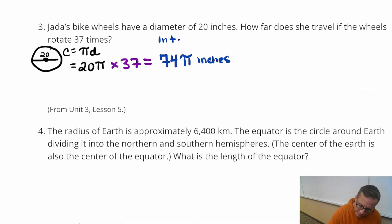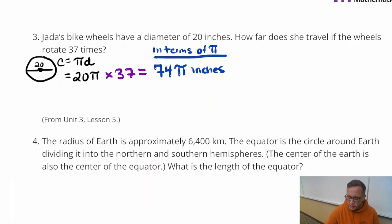So I'm going to put 74 pi inches. That's in terms of pi. If we want to know an actual number, we can do 74 times 3.14 or just hit your pi button on your calculator. So 3.14 times 74 is going to be 232.36 inches.